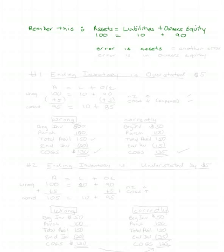Our balance sheet equation is always in balance. Let's put some numbers in: $100 in assets, $10 in liabilities, and $90 in owner's equity. If we're in balance to start with and there's an error in assets because something's wrong with ending inventory, that means there's an equal error somewhere else — and that error is going to be in owner's equity.